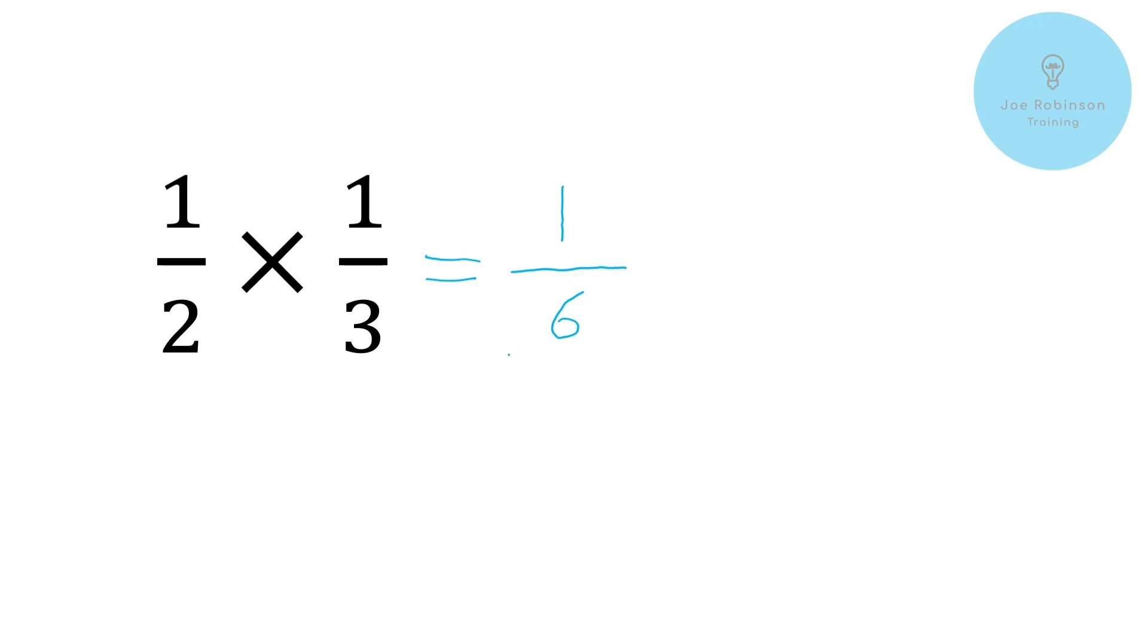And again if you remember from the previous video we looked at the example of how to kind of imagine this using pizza. If you imagine one third of a pizza and then you halve that third what you actually end up is one sixth of a pizza. And so the calculation you can see does make sense when you think about it in those terms.